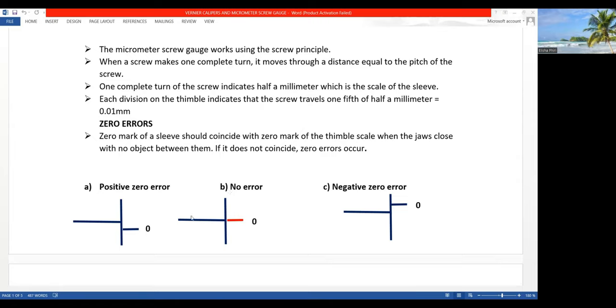When the zero is at the bottom of this line, which is on the sleeve, then we're going to have a positive zero error. And this is the correct way of starting to use a micrometer screw gauge. The zero has to coincide with the line on the sleeve. In a case where the zero happens to be on top of this line on the sleeve, then you're going to have a negative zero error. So, how do you deal with these errors? With the negative zero error, after you do the calculations, you have to add whatever value that you have to the final answer. With the positive zero error, you need to subtract that positive zero error from the answer that you're going to find.